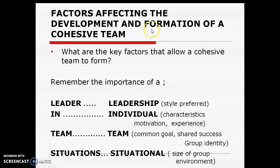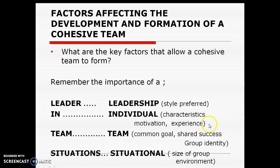The first factor affecting development and formation is leadership. If the style adopted by the leader is preferred by the group members, the team is more likely to be cohesive. For example, if you have a group of young netballers in year seven who are very timid, and the style of the leader is democratic — meaning they allow students to make decisions and aren't shouting at them — there's more chance that team is going to be cohesive.